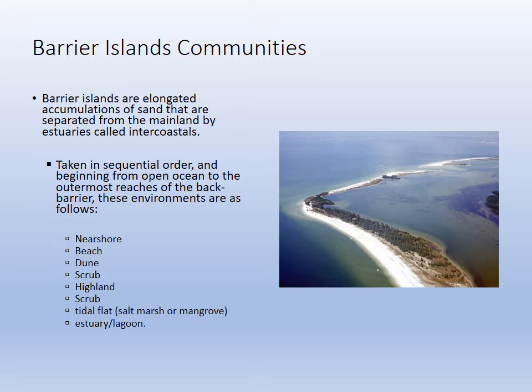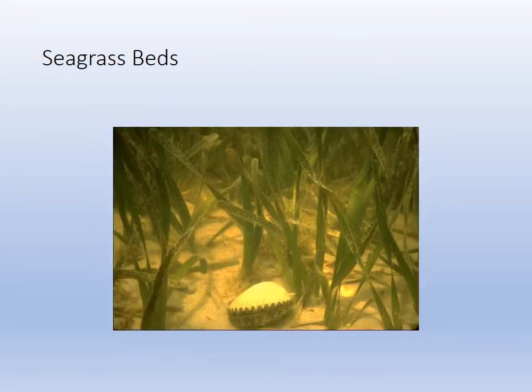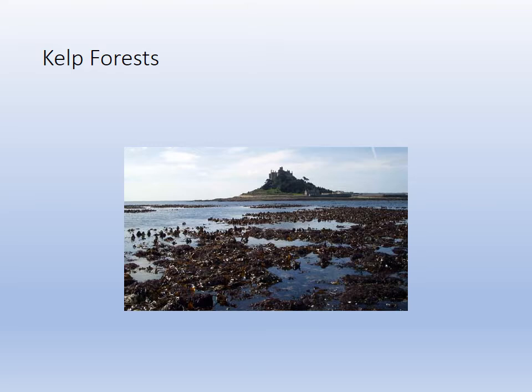Seagrass beds are another coastal habitat. There are three major types of seagrass, found in cool and warm water depending on the species — freshwater to brackish. Seagrass refers to a group of plants that have underground stems with blade-like leaves protruding upward. They look like traditional grass but are actually flowering plants that pollinate underwater.